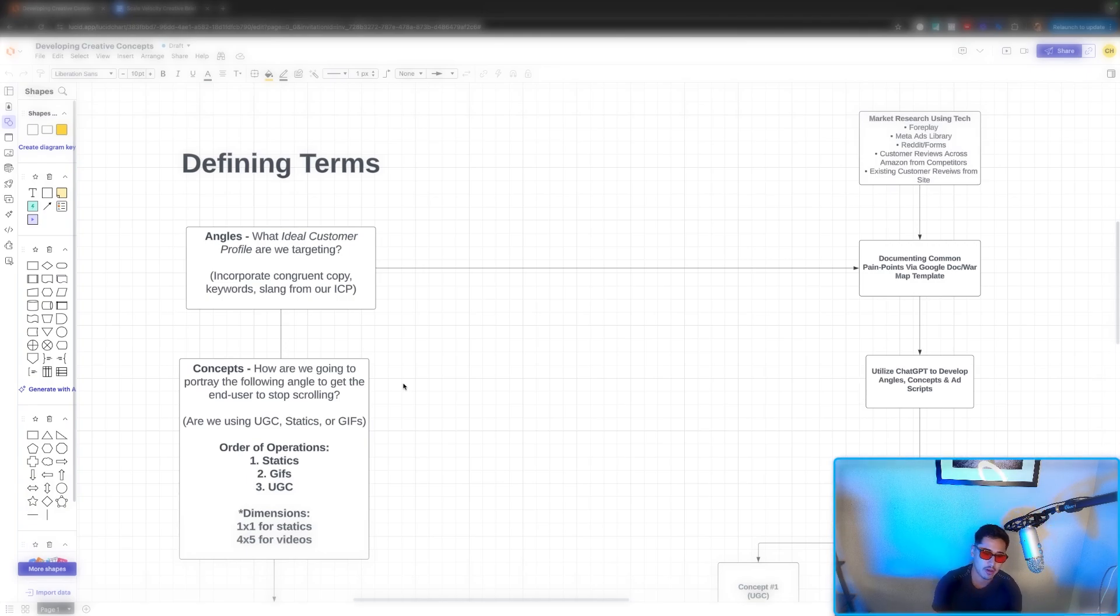Now order operations, when it comes to producing, statics by far are the most effective because you can create like five static concepts within an hour, anywhere from one to two to three hours. It really doesn't take that much work. GIFs, a bit more editing, a bit more visuals. And then the last creative concept that takes the longest anywhere from two, three to even four weeks as UGC.